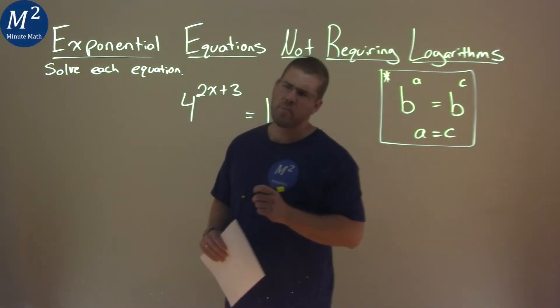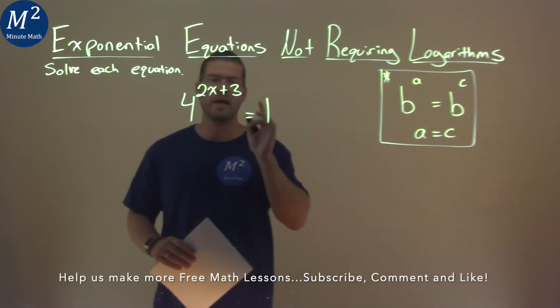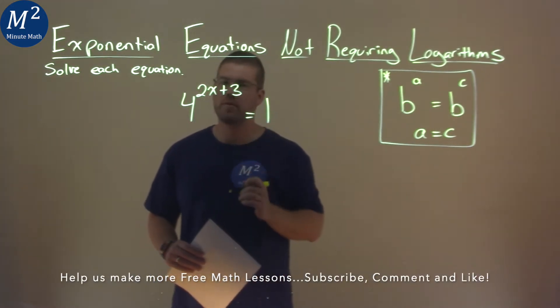We're given this problem right here, 4 to the 2x plus 3 power, and that is equal to 1, and we have to solve this.